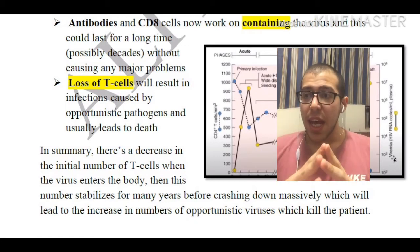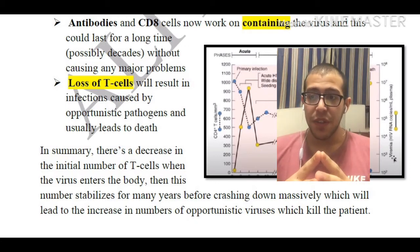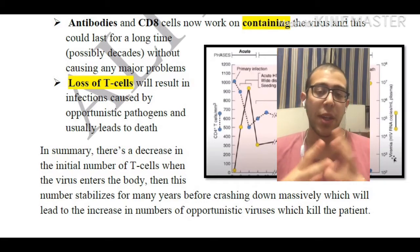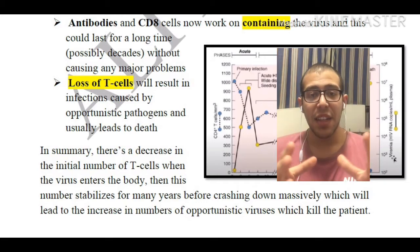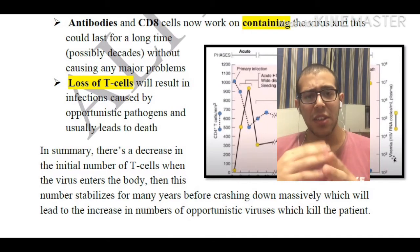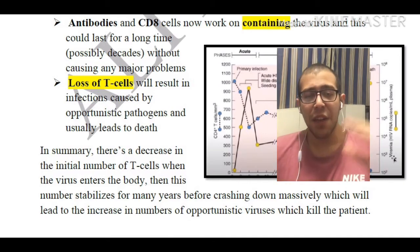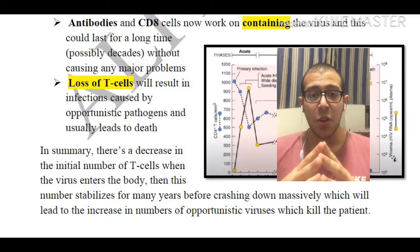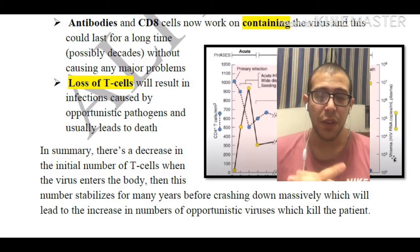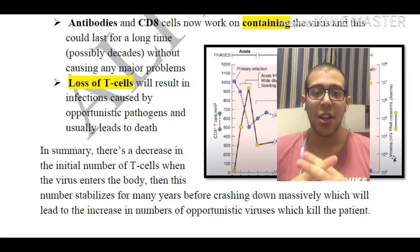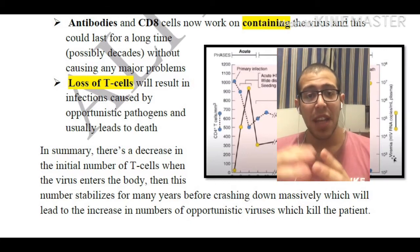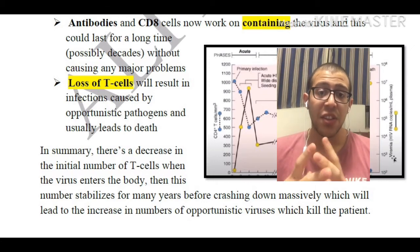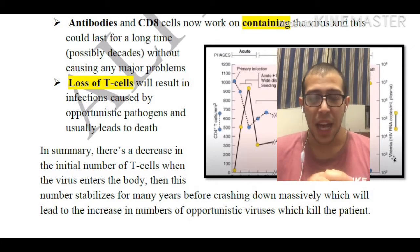In summary, there is a decrease in the initial number of T cells when the virus first enters the body, followed by a phase of fighting between the immune system and the virus that generally lasts a very long time. Eventually the virus wins this battle, the number of immune cells dwindles rapidly, opportunistic pathogens come into play causing infections, and this usually leads to death.